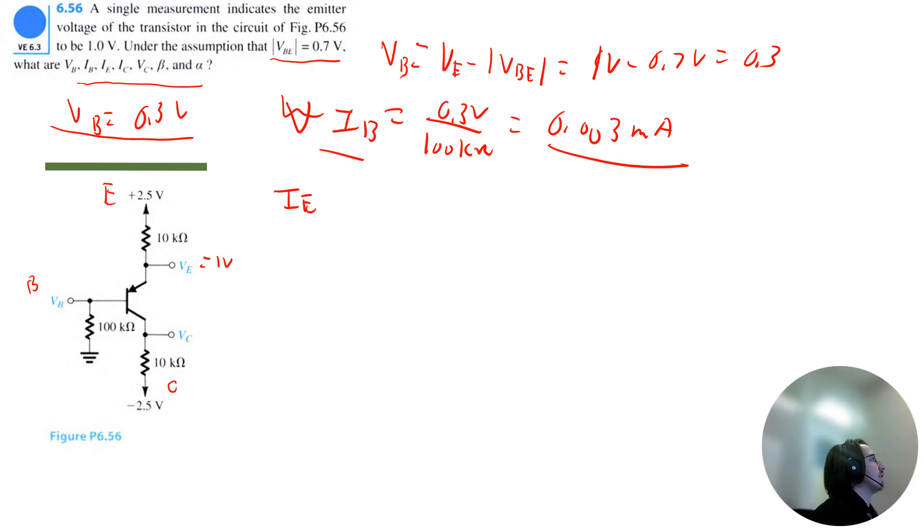Now we want to find emitter current. So we can just do some analysis. That will be 2.5 volts minus the emitter voltage divided by that resistance of 10 kilo ohms. That is 0.15 milliamps.